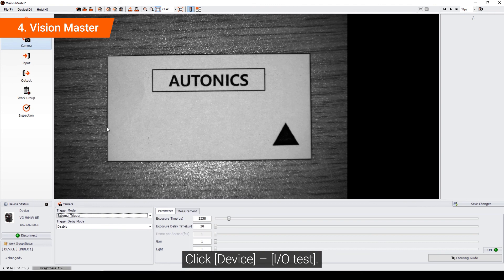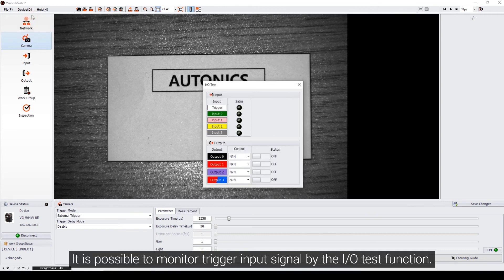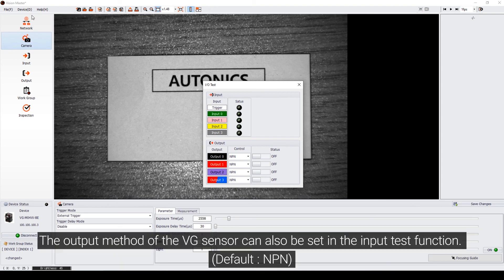Click Device and I-O Test. It is possible to monitor the trigger input signal using the I-O Test function. The output method of the VG sensor can also be set in the I-O Test function.